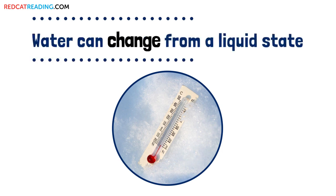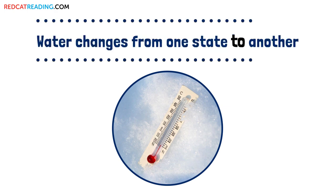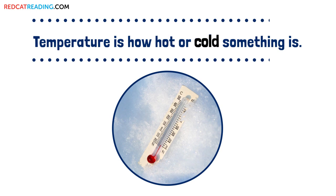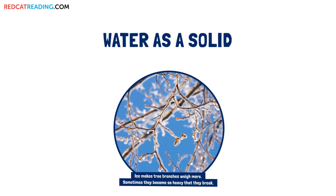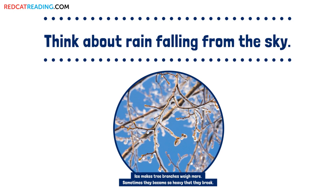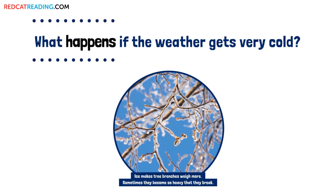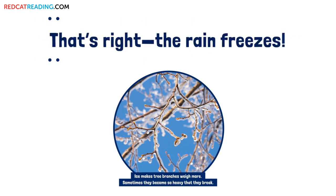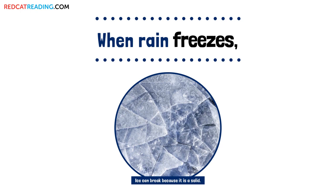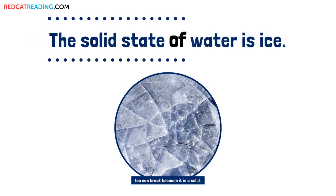Water can change from a liquid state to other states because of temperature. Temperature is how hot or cold something is. Think about rain falling from the sky — the rain is in a liquid state. What happens if the weather gets very cold? That's right, the rain freezes. When rain freezes it changes from a liquid state to a solid state.